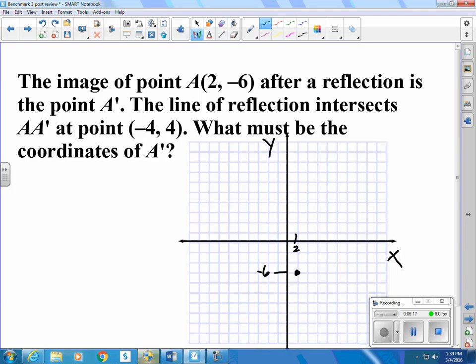And so we have the intersection of the reflection line and the line between the two points at negative 4, positive 4. So that point right there. So we know that the line goes perpendicular to this line, and we know it's going to keep going past that the same distance.